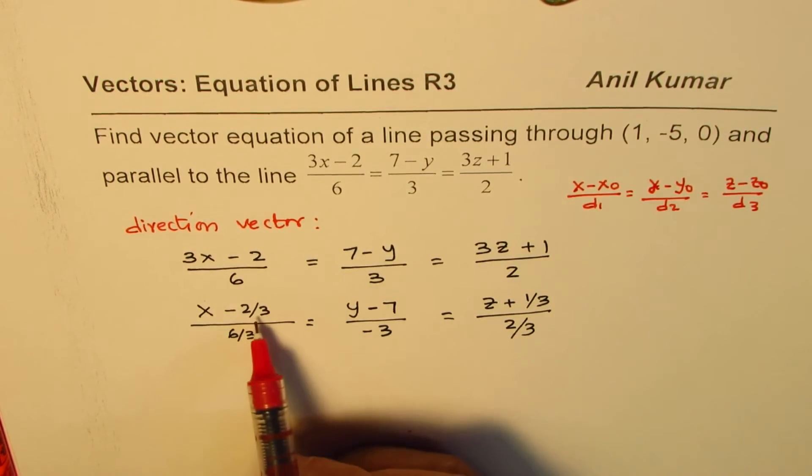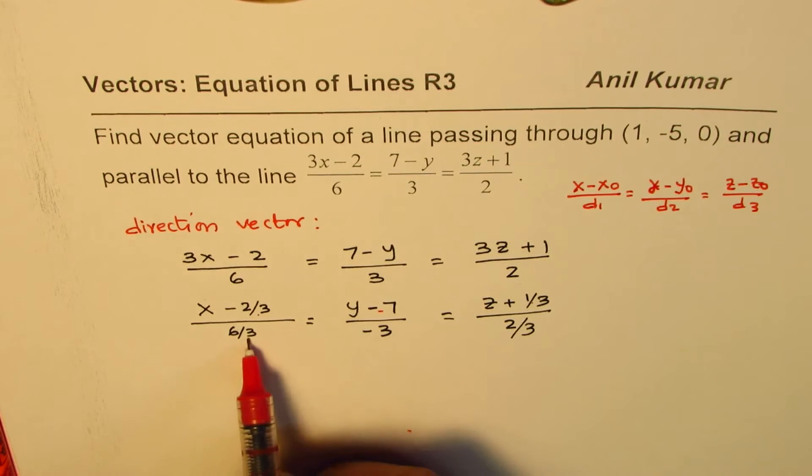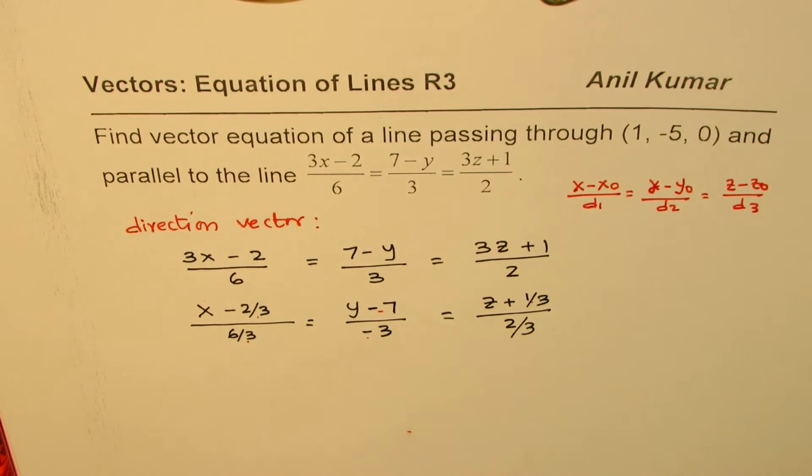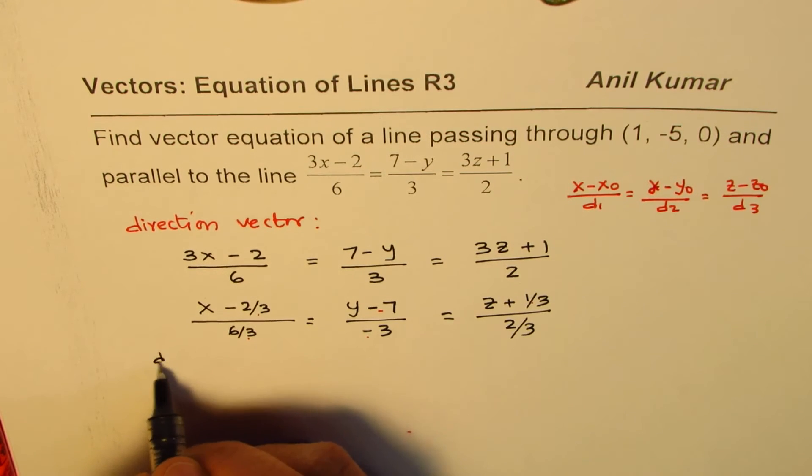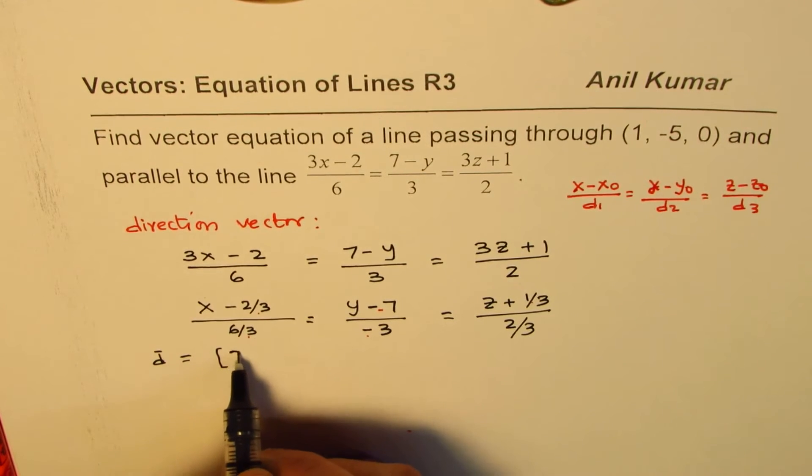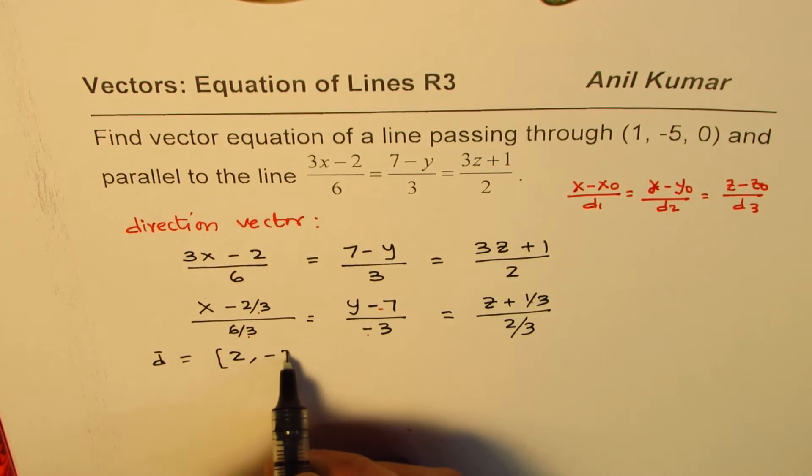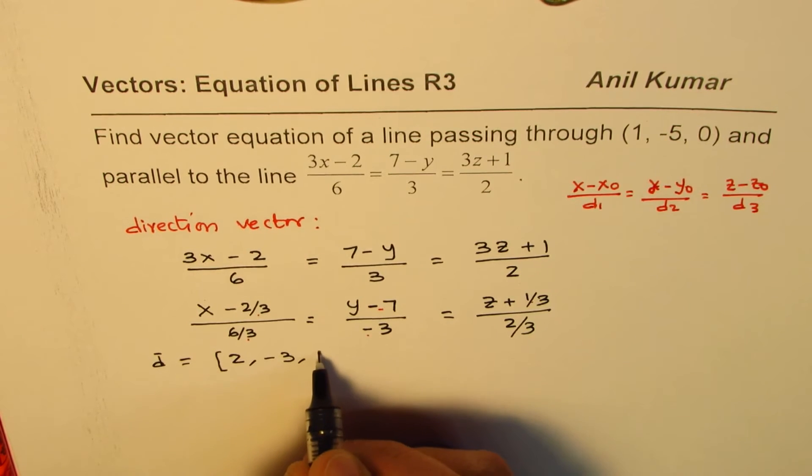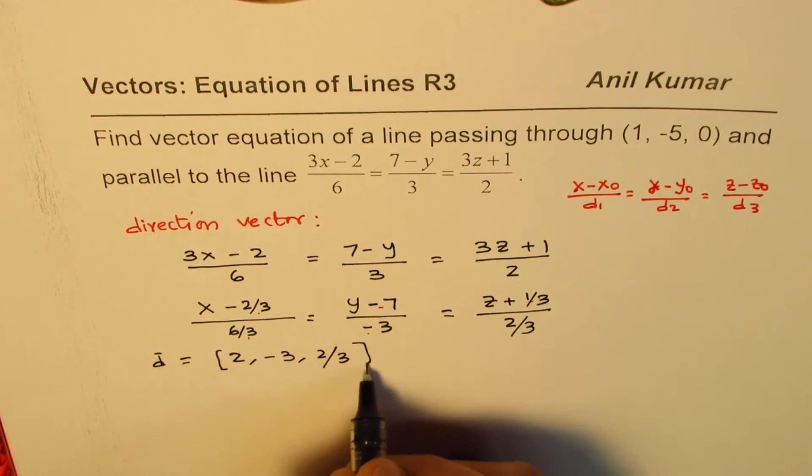And from here, we can read the position vector and also the direction vector. That's the whole idea. So from here, we know that the direction vector d is equal to (6/3 = 2, -3, 2/3), which is (2, -3, 2/3).